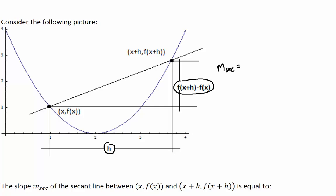So the slope is rise divided by run. So it's going to be f(x + h) minus f(x) all over h. Okay, so that was our difference quotient.